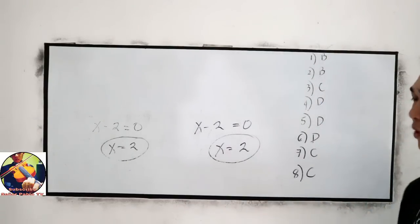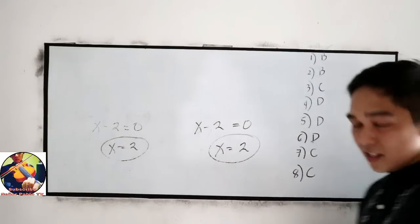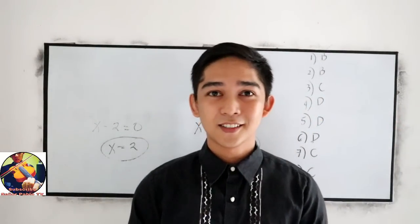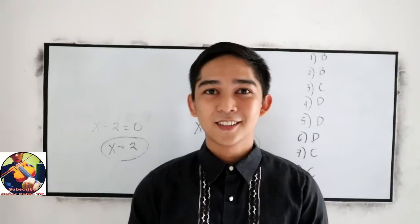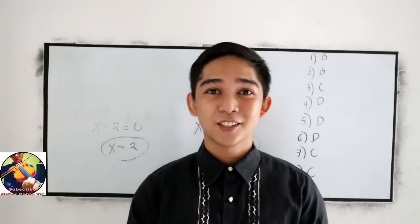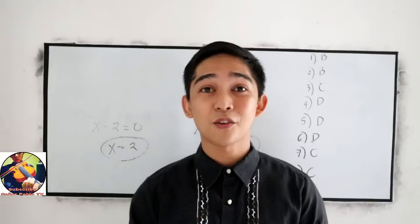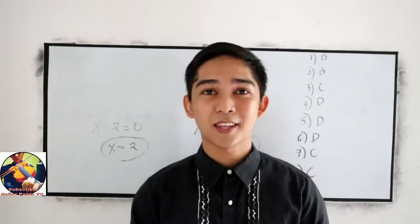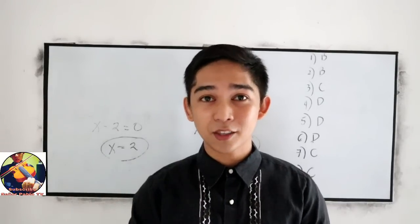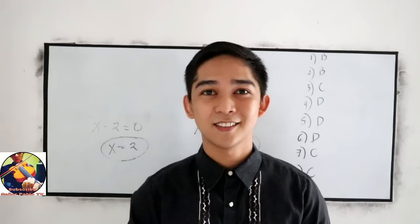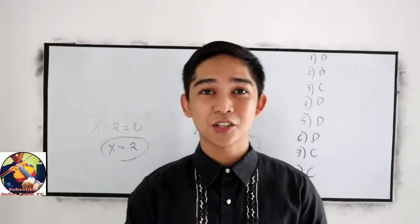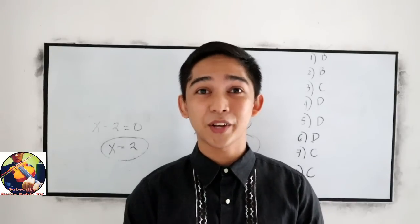So that covers numbers 1 through 8. This is part 1 of our Tricks and Trivia — checking of the periodic tests in General Mathematics. Stay tuned for part 2 this coming Saturday. Thank you for watching Sr. Pablo Tricks and Trivia.